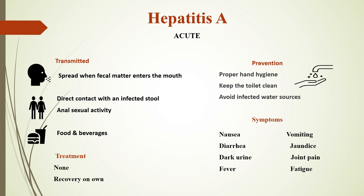Symptoms of hepatitis A are nausea, vomiting, diarrhea, dark urine, fever, and jaundice — where you can see the patient turn more yellow, especially visible in the eyes. If you have a patient who is African American, you can still see them turn more yellow. Also fatigue.